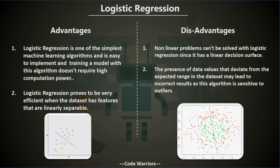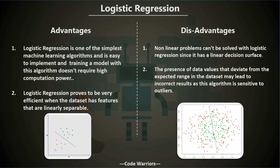Now the advantages and disadvantages of logistic regression. The main advantage is that it is very simple and easy to implement — just by converting a linear regression model into probabilities. It doesn't require much high computational power compared to other algorithms. Second, it proves very efficient when the data is linearly separable.